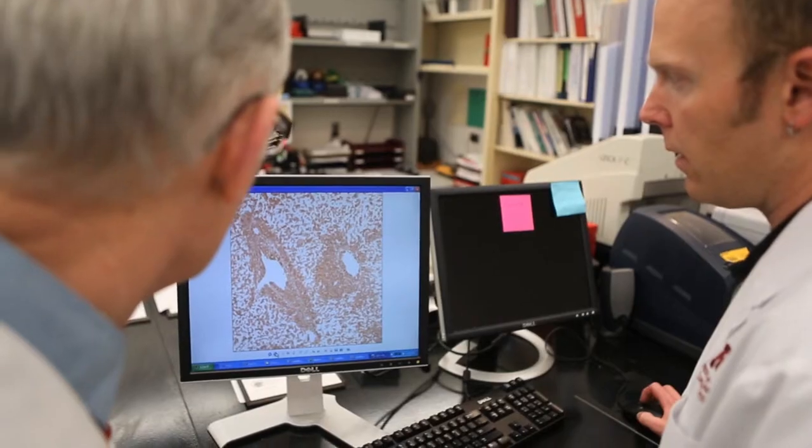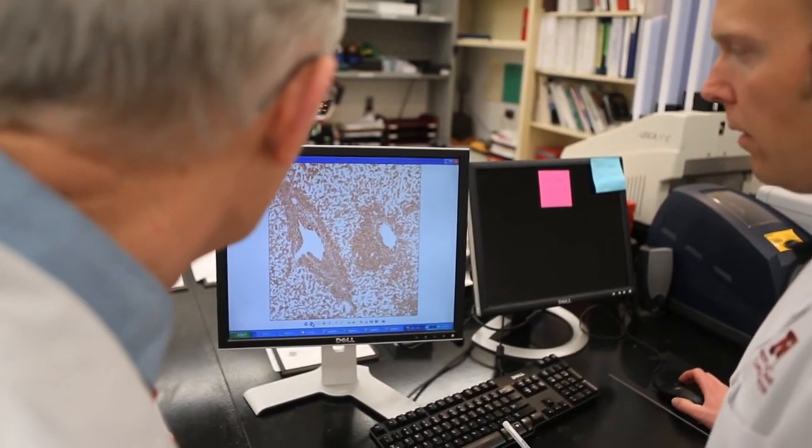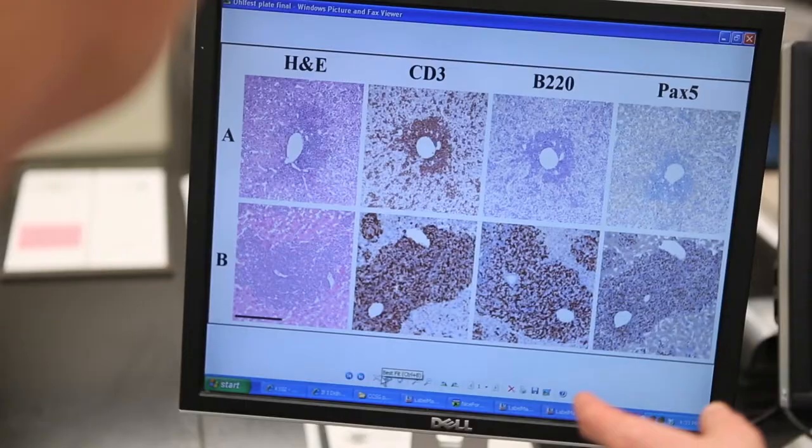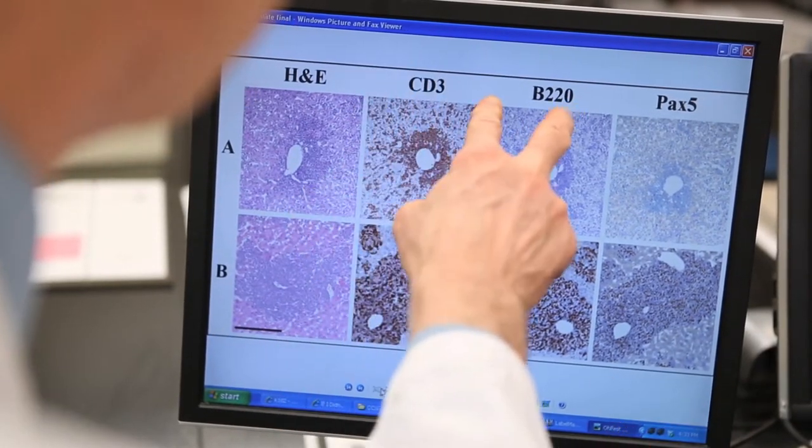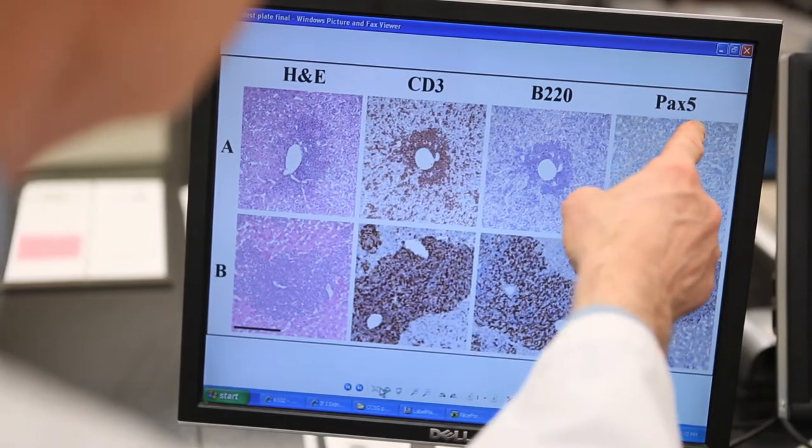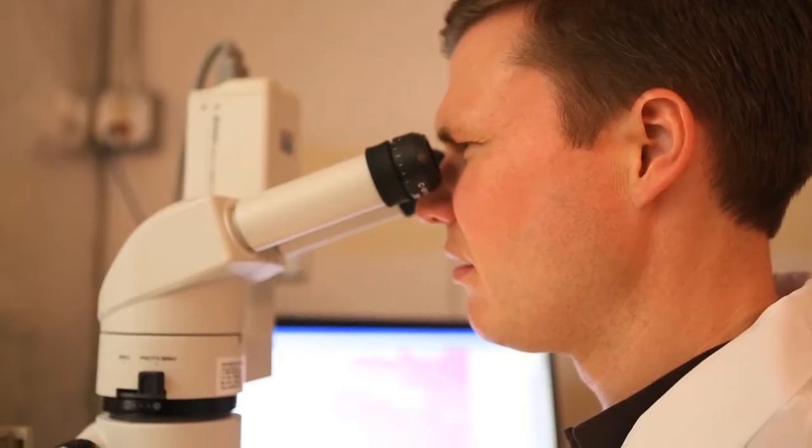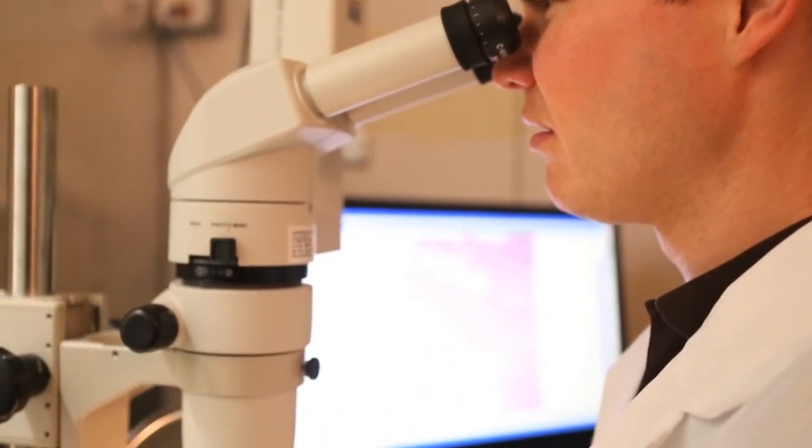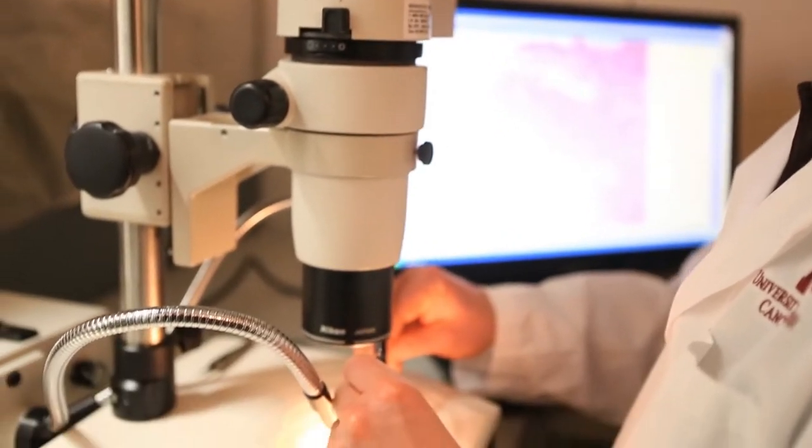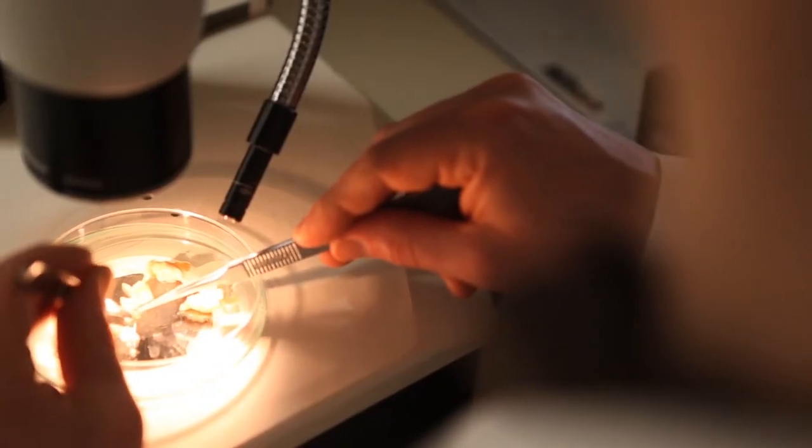The director of the Comparative Pathology Shared Resource is Dr. Jerry O'Sullivan. Dr. O'Sullivan is an ACVP board-certified veterinary pathologist with over 20 years of experience in comparative and experimental pathology. His work in pathology and research has involved numerous species including mice, rats, and non-human primates.